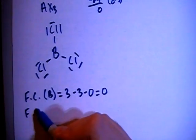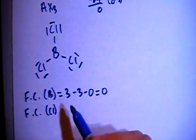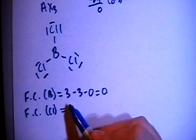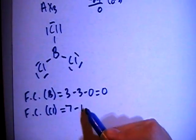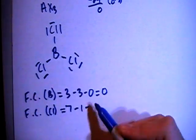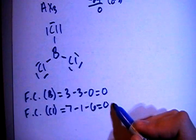And now we can check the formal charge on each of the chlorines, and they all have the same setup, so the formal charges should all be equal. So 7 valence brought in, minus 1 bond for each, minus 2, 4, 6 non-bonding electrons for a formal charge of 0 on each of the chlorines.